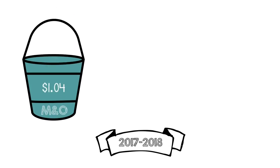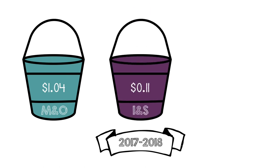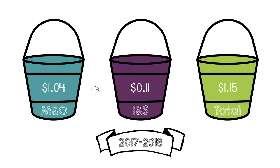For the 2017-18 school year, ECISD's maintenance and operations tax rate was $1.04, and the I&S tax rate was $0.11, for a total tax rate of $1.15 for each $100 of your home's appraised value.